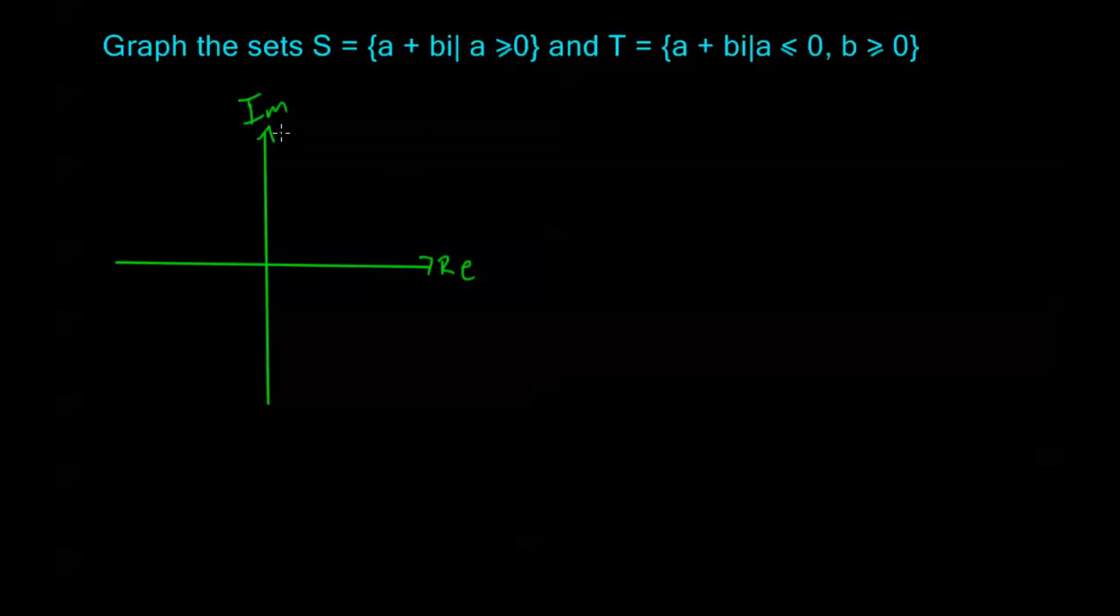So taking a look at our set S, I have A plus BI where A is greater than or equal to 0. Now notice I don't have any restrictions in my membership law here for B, so that means that B can be anything. B can be positive or negative. And A greater than or equal to 0 is going to happen to the right of this imaginary axis.